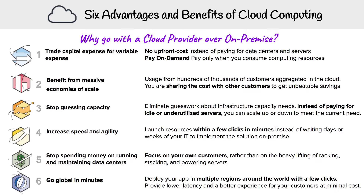The next point is stop guessing capacity — eliminate guesswork about infrastructure capacity needs. Instead of paying for idle or underutilized servers, you can scale up or down to meet current needs. With on prem, you would buy servers and they would either be underutilized because they're too big for the job, or just not being used all the time.